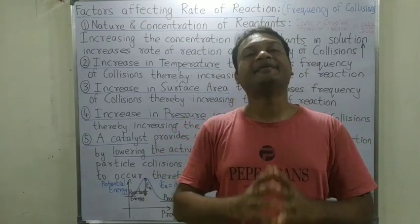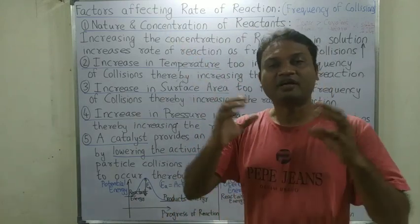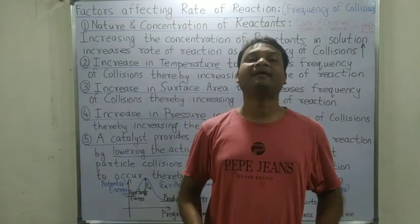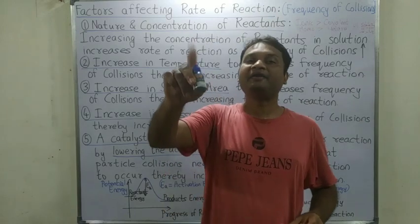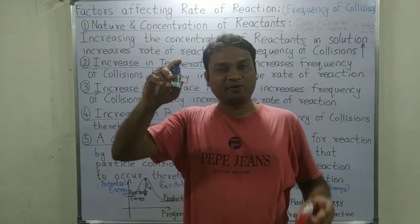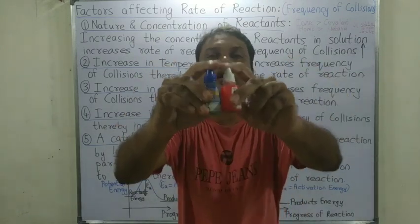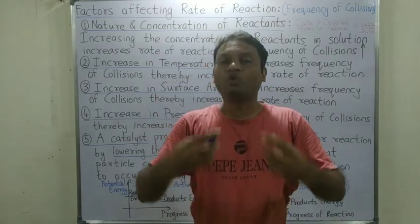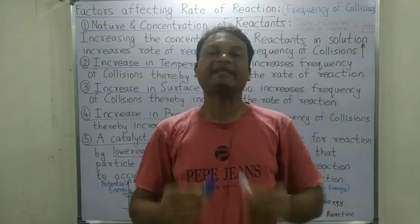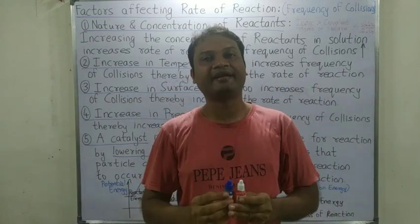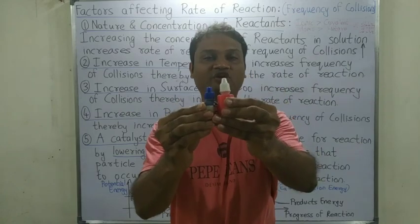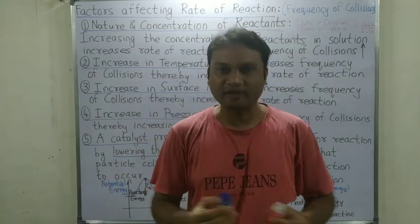The common thread in all these factors is the concept of frequency of collisions. For example, in the reaction of nitrogen plus hydrogen forming ammonia, if nitrogen and hydrogen are combining to form ammonia, then the higher the frequency of collision between the two reactants, the more collisions occur, and the more the product will be formed — more the frequency of collisions, faster the product will be formed.